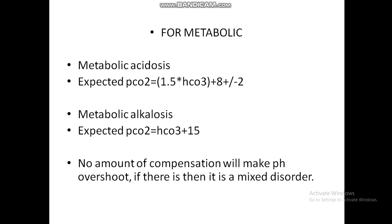So these are the first four steps: first, check validity; second, determine the pH; third, identify the primary disorder; fourth, calculate compensation. In tomorrow's video I'll discuss secondary disorders, anion gap, high anion gap metabolic acidosis, normal anion gap metabolic acidosis, followed by one or two examples. Thank you all for patient listening — if you have any doubts, please leave them in the comment box.